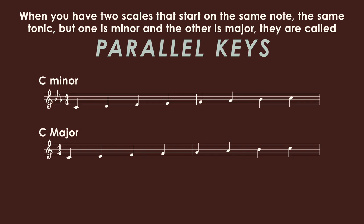So for each of the twelve major keys, you have a parallel minor key. Why do we see this parallel major and minor in this piece? It's a way to change the feeling of the music. Minor keys are more associated with feelings of sadness, feelings of longing, feelings of loss, while major keys are more associated with feelings of happiness, hopefulness, and contentedness. So it's really a tool for the composer to add different emotions to the music.